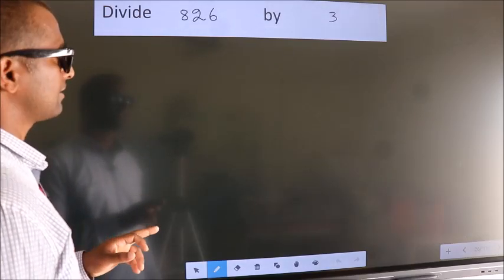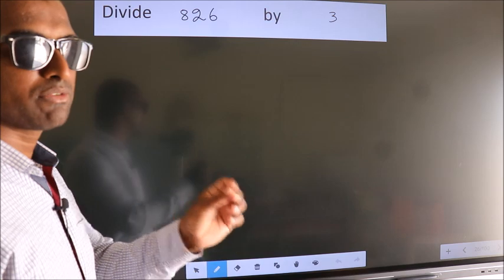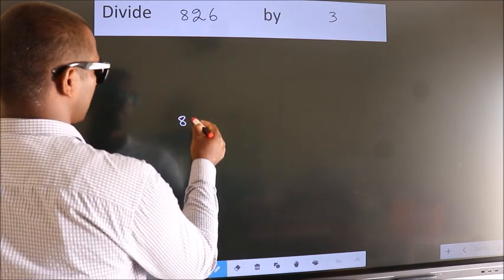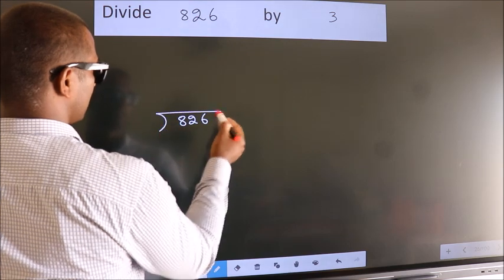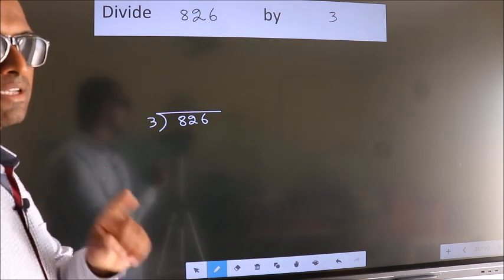Divide 8.26 by 3. To do this division, we should frame it in this way: 8.26 here, 3 here. This is your step 1.